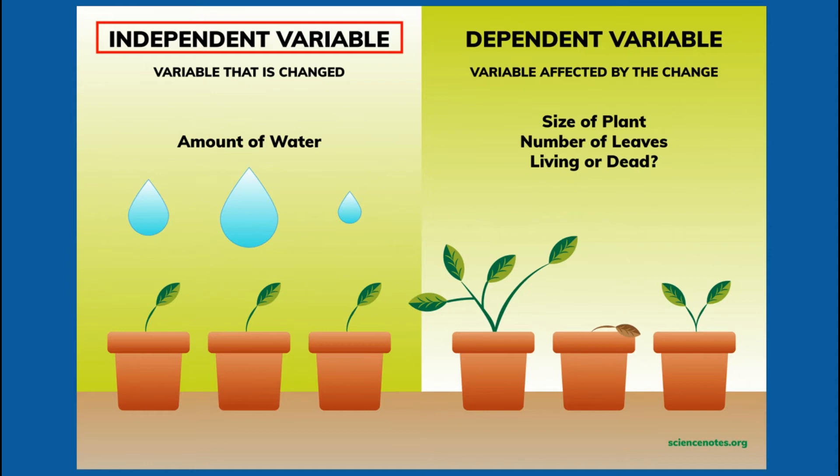It changes over time. When the amount of water changes, the dependent variable, which is the growth of the plant, is affected. Either it grows healthier or over-hydrated. Now, based on this image, can you give an example in the comment section below of an independent and dependent variable relationship?